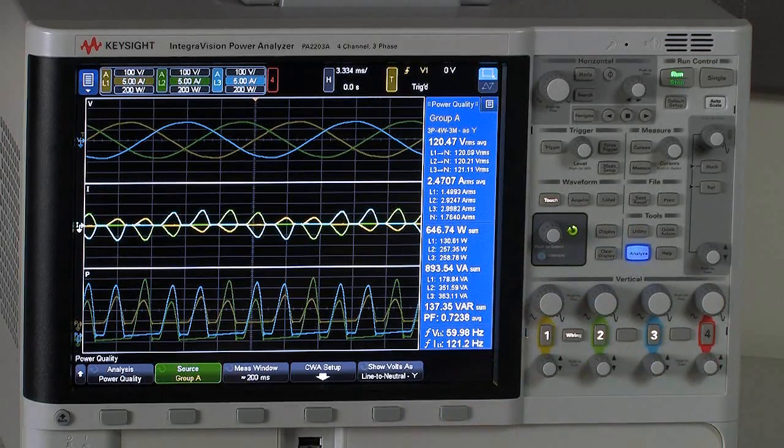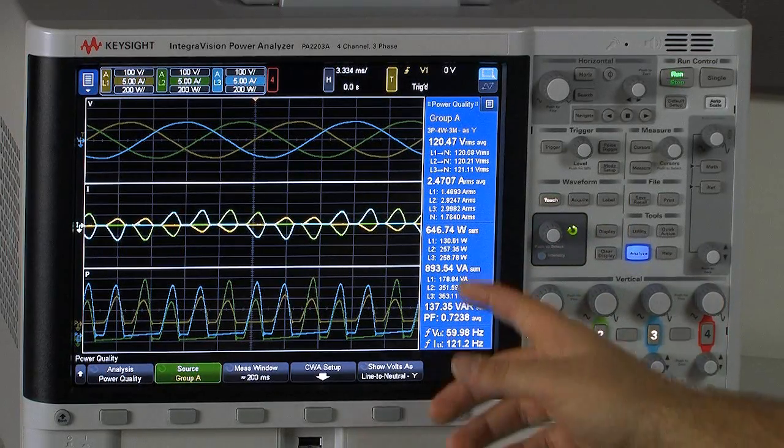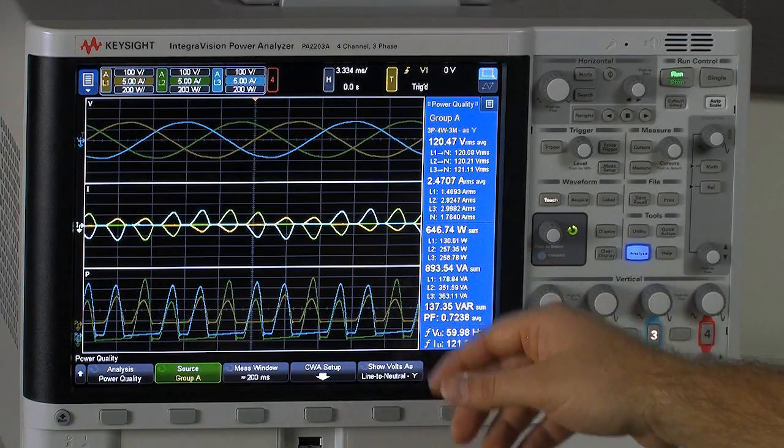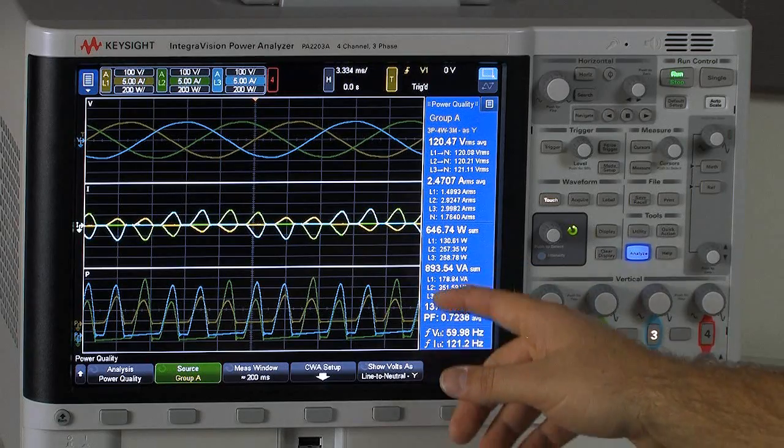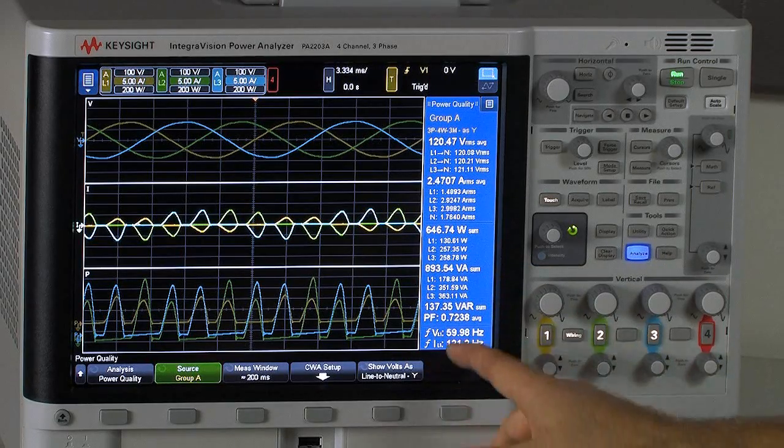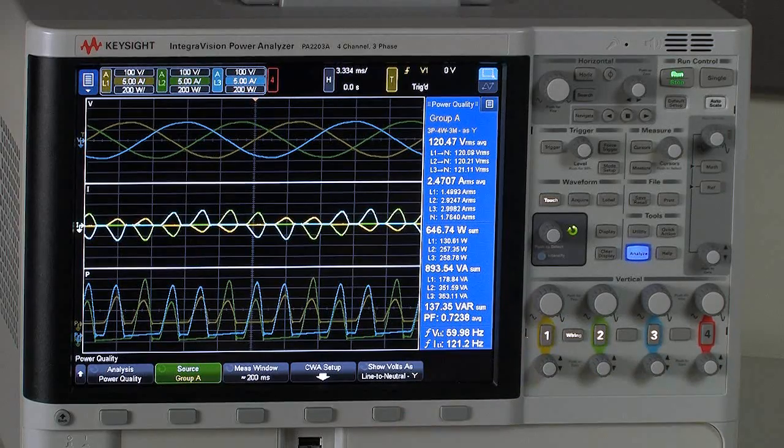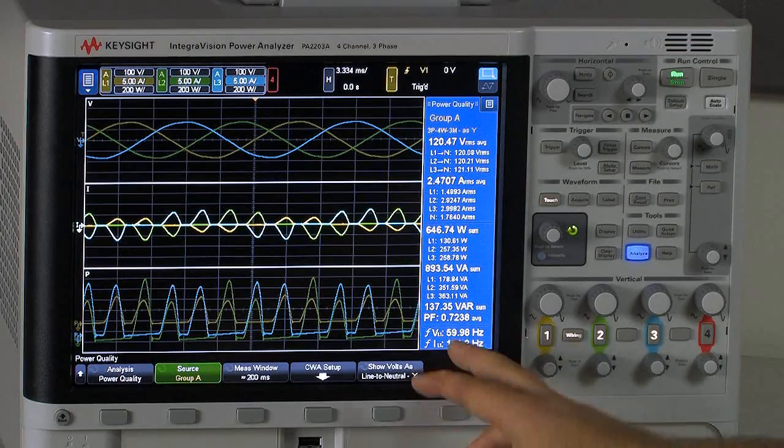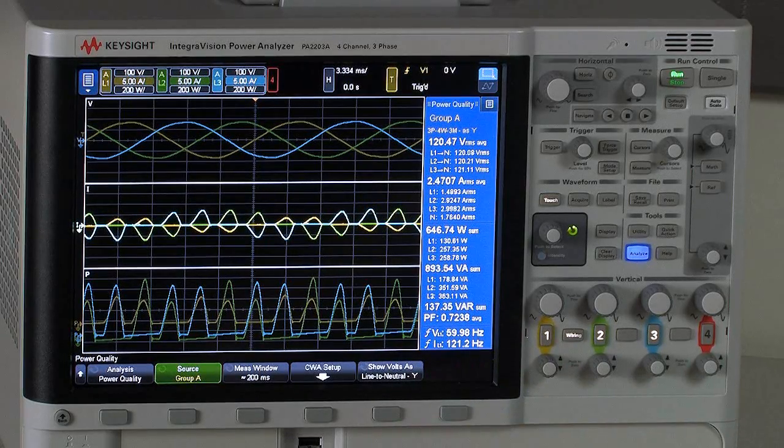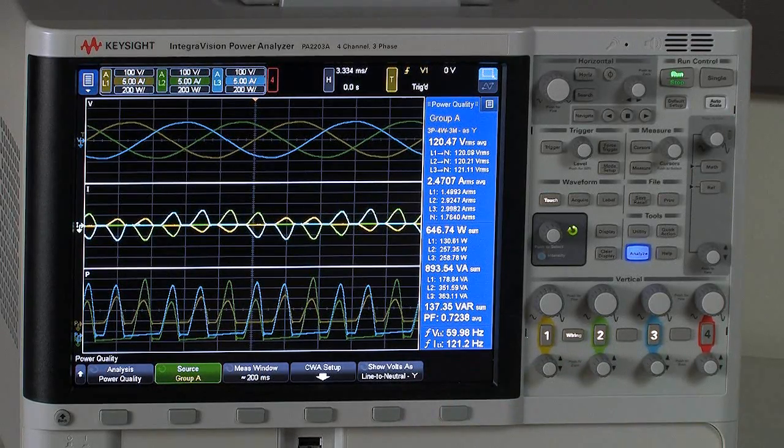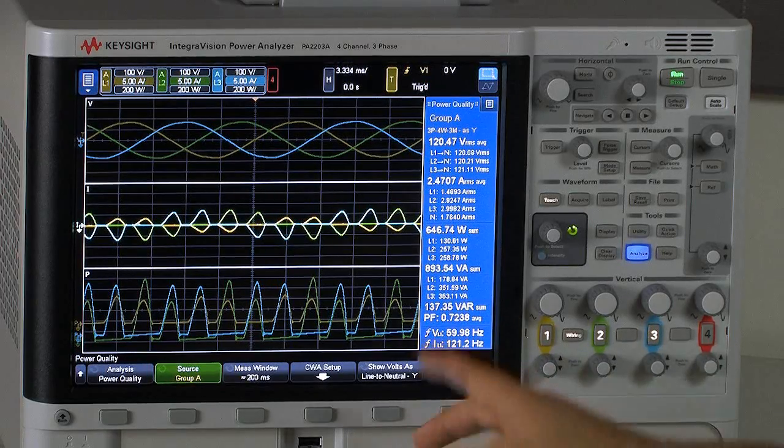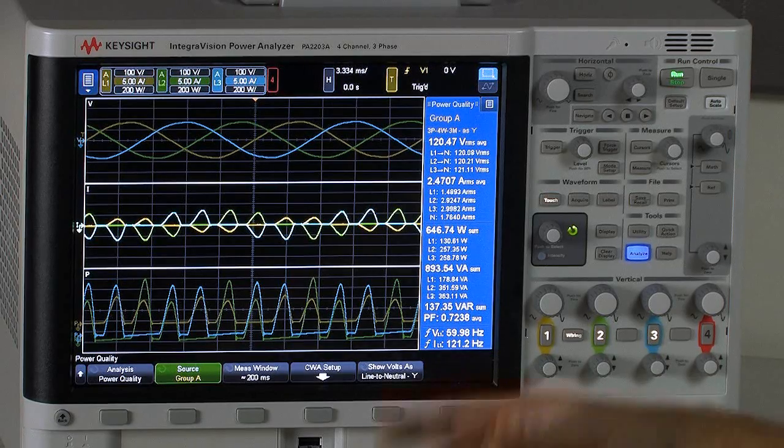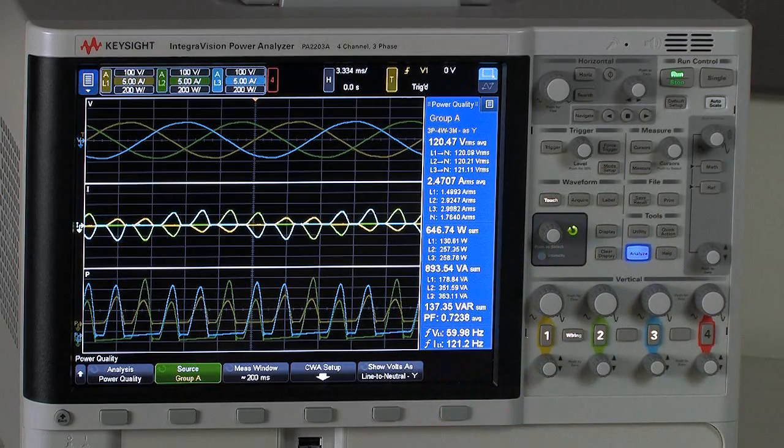And then similarly with real power and apparent power, I can see the powers of the individual phases as well as the group real power, the group apparent power, and then finally the group reactive power here at the bottom. And then of course we have power factor measurement and average power power factor measurement here at the bottom as well as voltage and current frequency measurements, which because of the nature of the rectifier I'm looking at, you can see the current frequency is actually measured to be twice that of the input voltage.